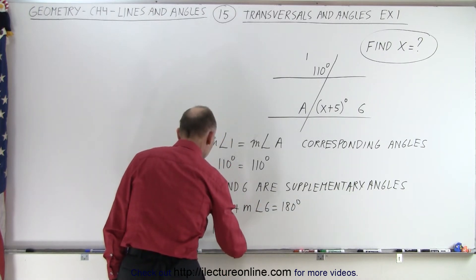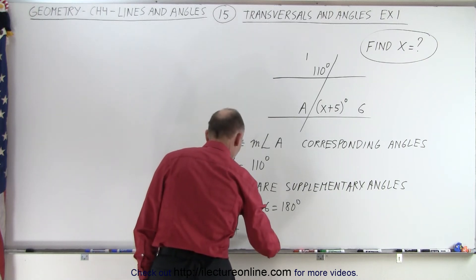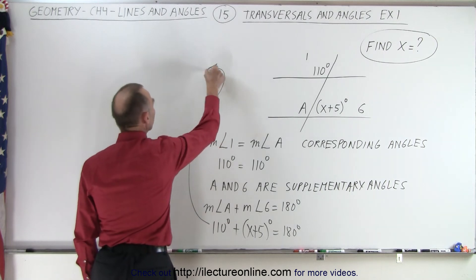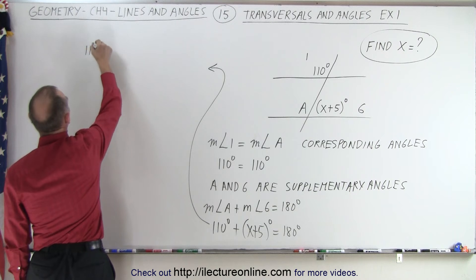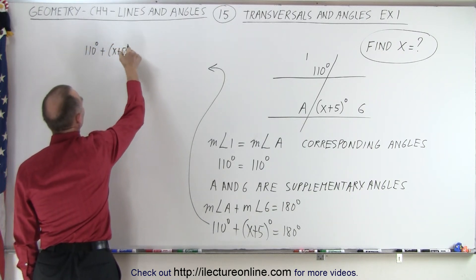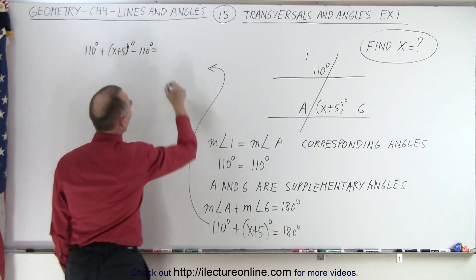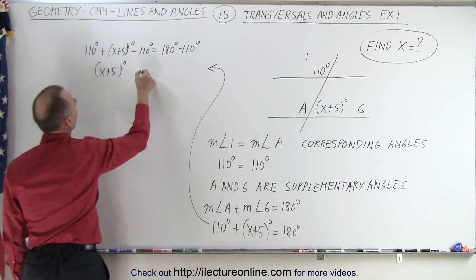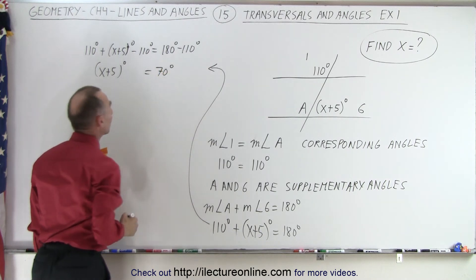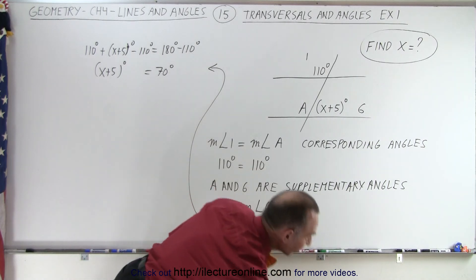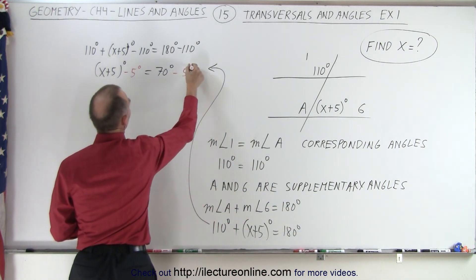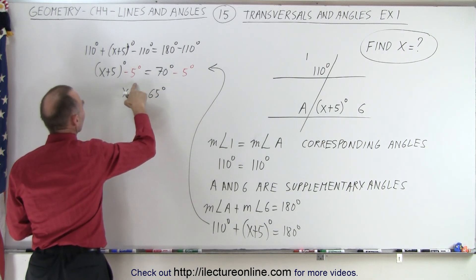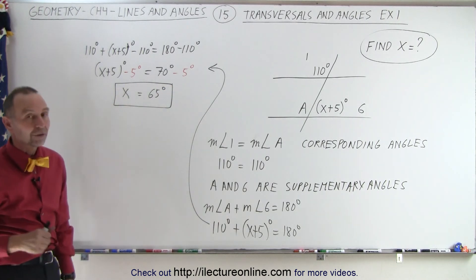In other words, the measure of angle A is 110 degrees, plus the measure of angle 6, which is x plus 5 degrees, and that must add up to 180 degrees. Now this allows us to solve for x. We can first subtract 110 degrees from both sides: 110 degrees plus (x plus 5 degrees) minus 110 degrees equals 180 degrees minus 110 degrees. That cancels out, so now we have x plus 5 degrees equals 70 degrees. Now we can subtract 5 from both sides, so x degrees equals 70 minus 5, or 65 degrees. And so this is then the answer — the value of x.